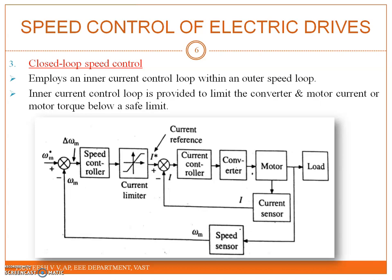When close to the desired speed, the limiter desaturates and steady state is reached at the desired speed at a current for which motor torque equals load torque. A decrease in reference speed produces a negative speed error, and the current limiter saturates and sets the current reference for the inner loop at a value corresponding to the maximum allowable current. Consequently, the drive decelerates in braking mode at the maximum allowable current. When close to the required speed, the current limiter desaturates and operation transfers from braking to motoring, and the drive settles at the desired speed.